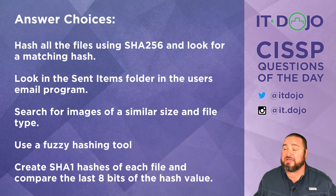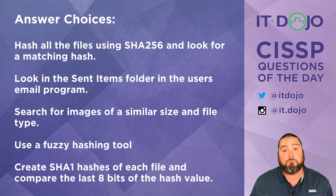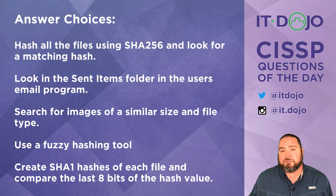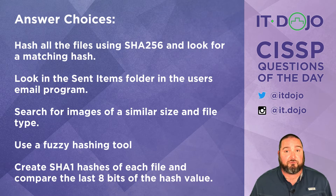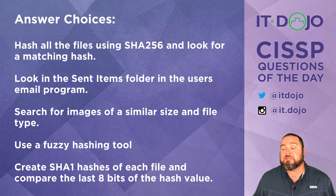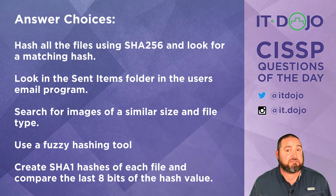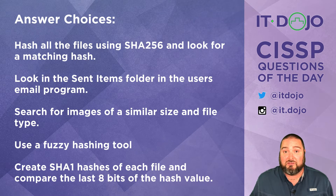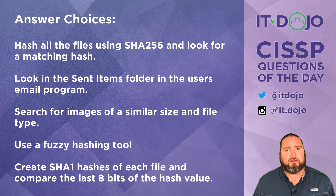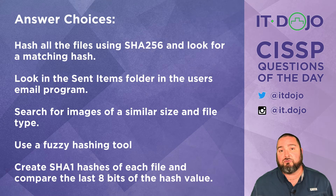So just looking for matching hashes is not going to help him identify a similar file on the system. The next answer says he should look in the sent items folder of the user's email — certainly not a bad place to look, but it's perfectly plausible that the person sent the email and then deleted the sent items folder, so there may be no remnant there. The next answer choice says look for files of a similar size and similar type. Lots of JPEGs are about the same size, so it's not really going to be a super awesome way to find this file.